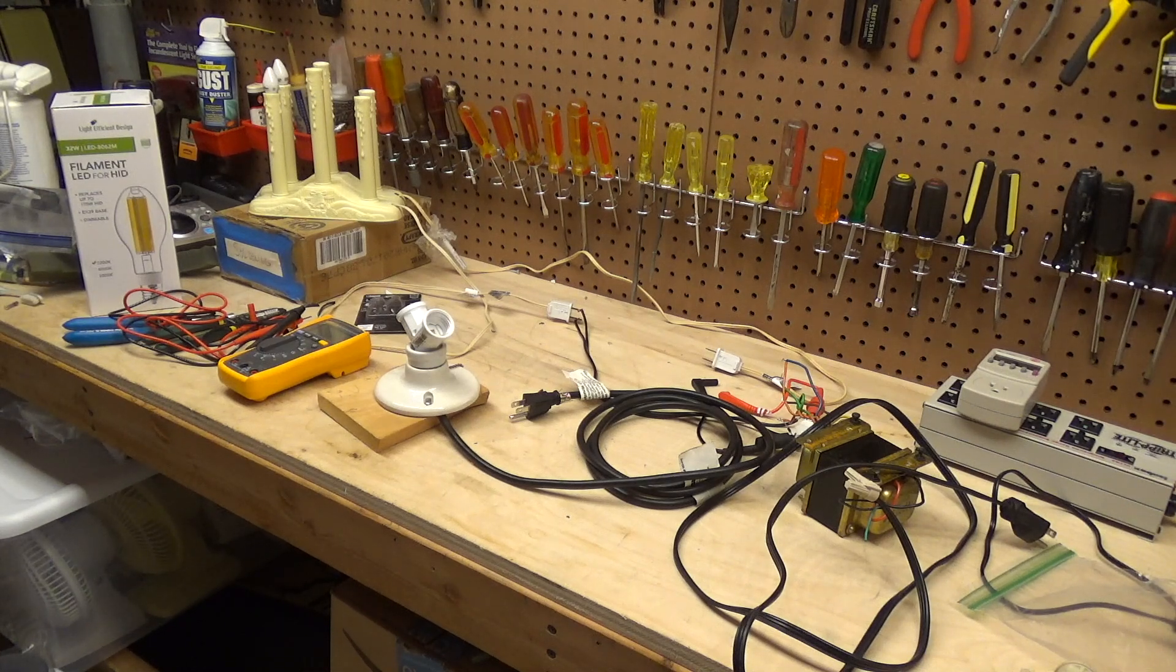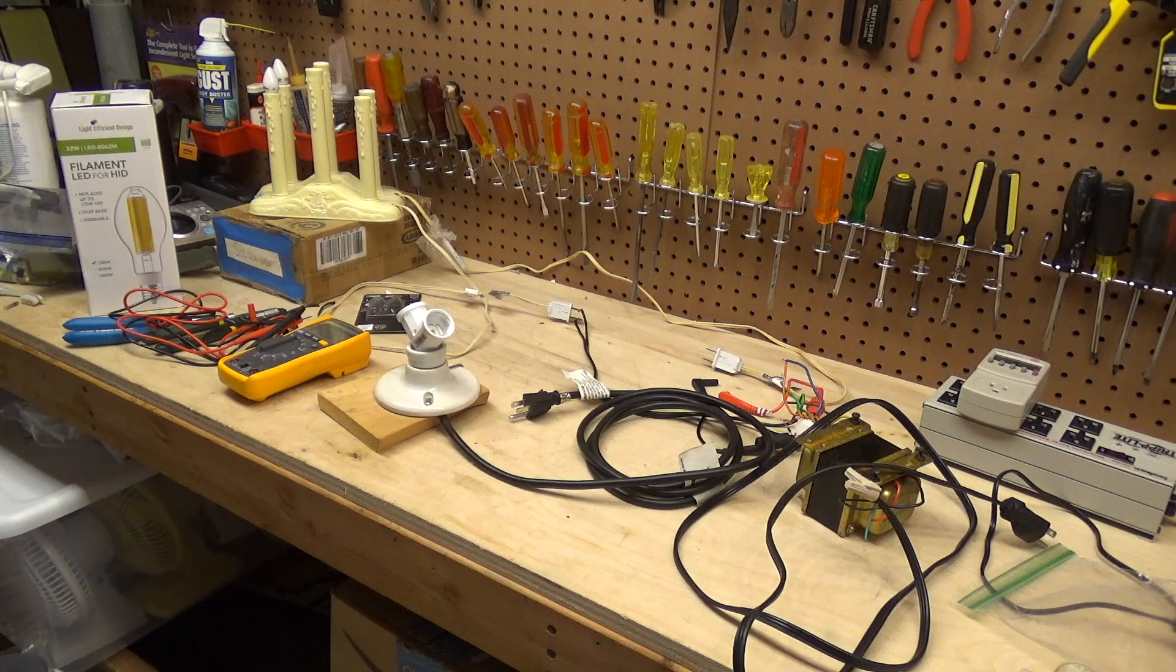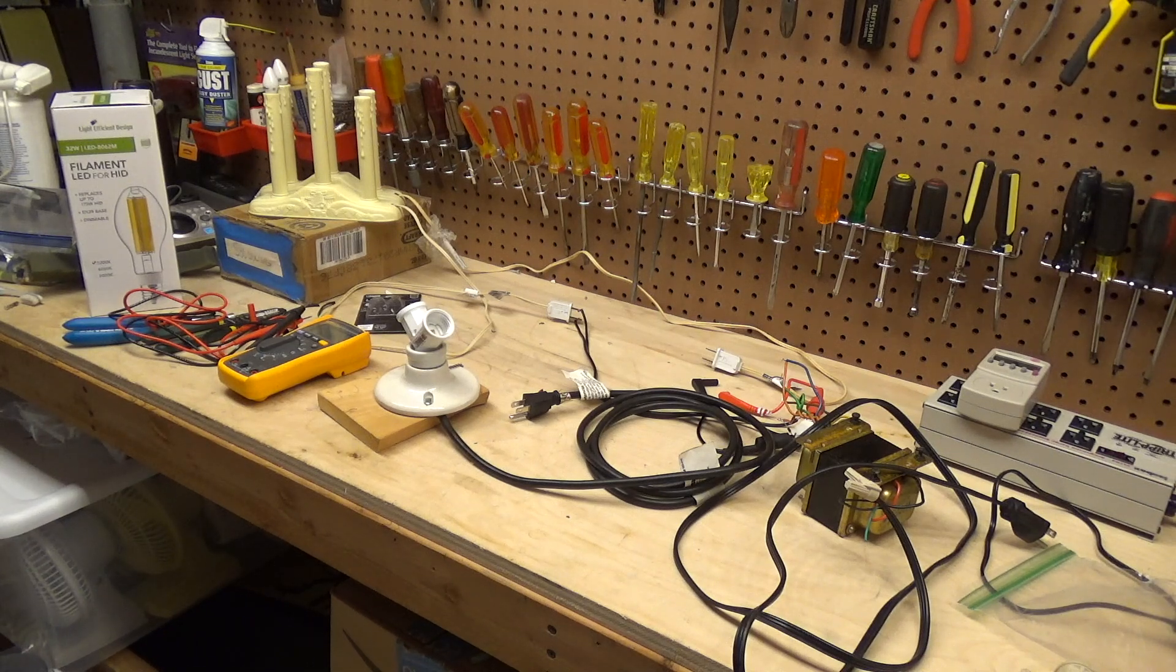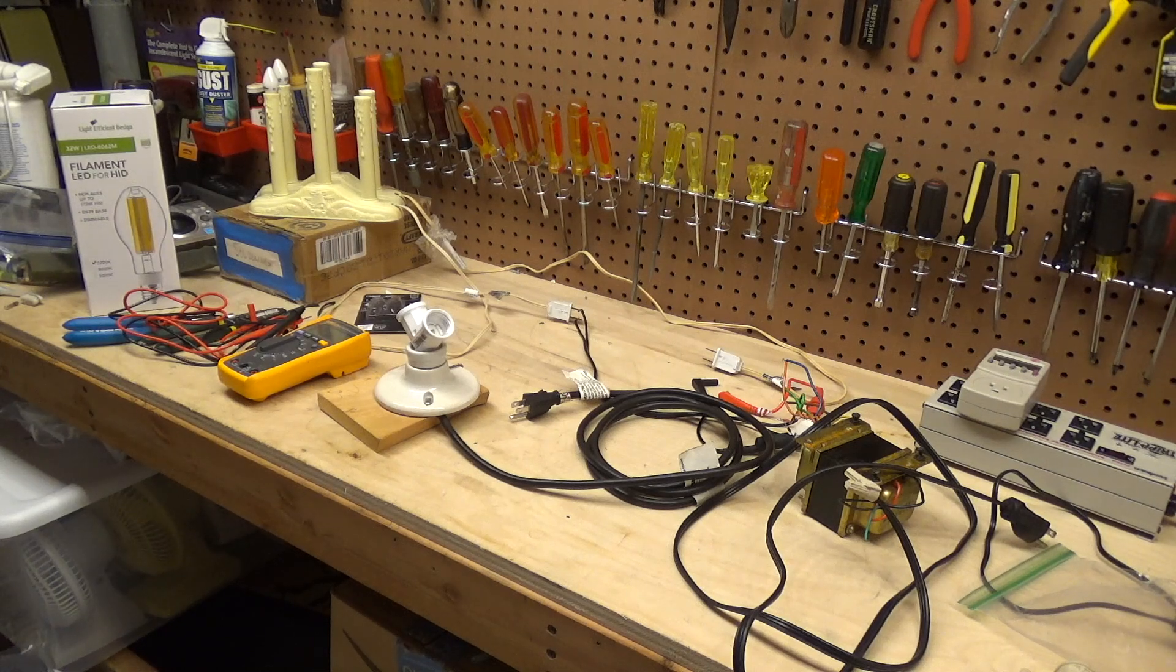So these are 600 lumens. What does that claim to be? 450. Okay, so this is a 43 watt. This is probably a 60 watt equivalent. Right. This is a 40 watt equivalent.